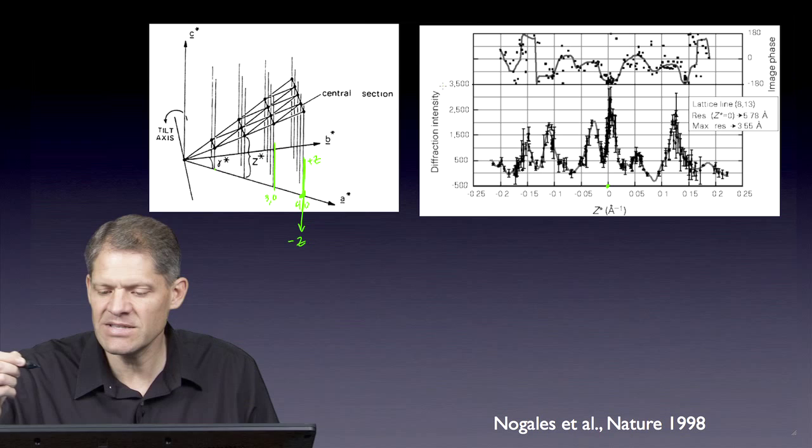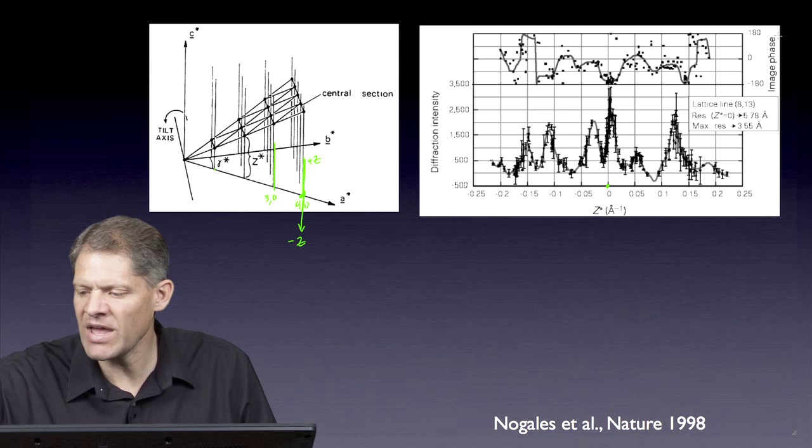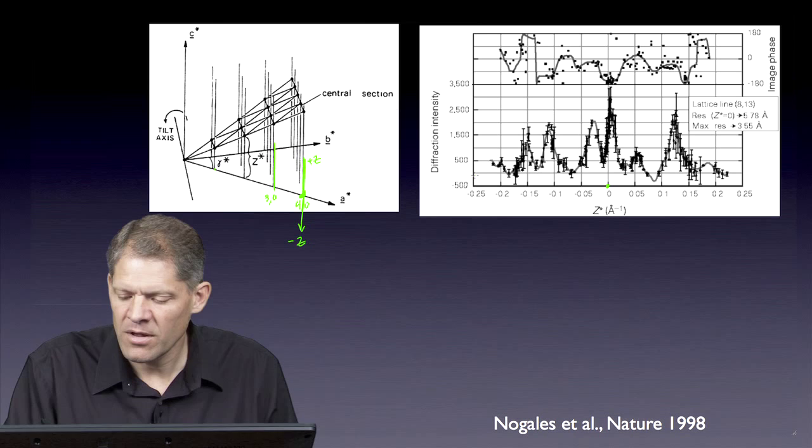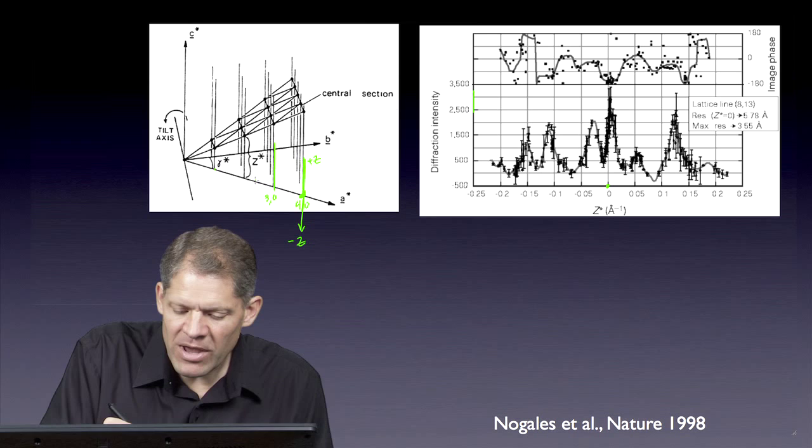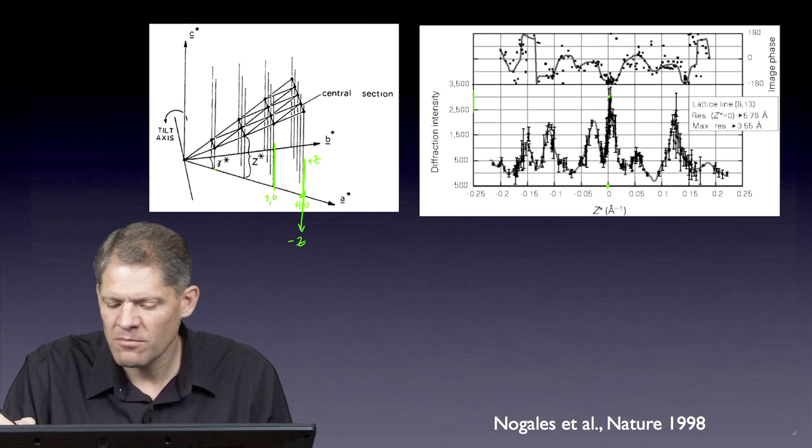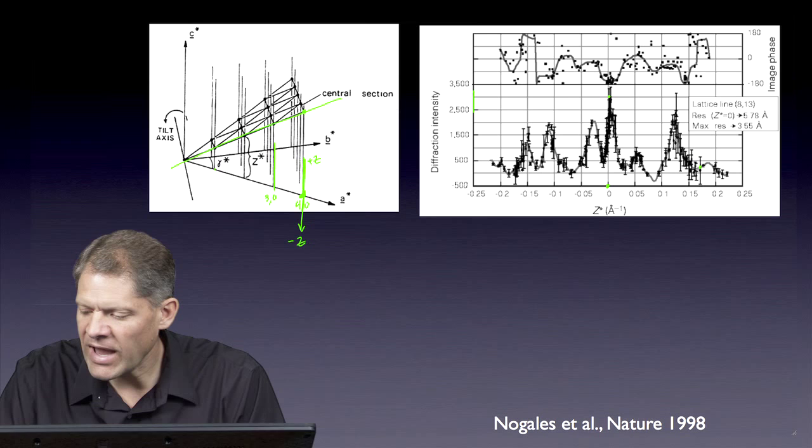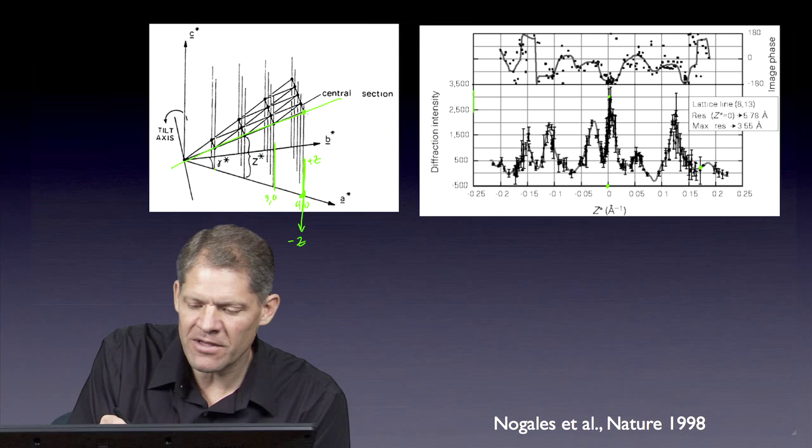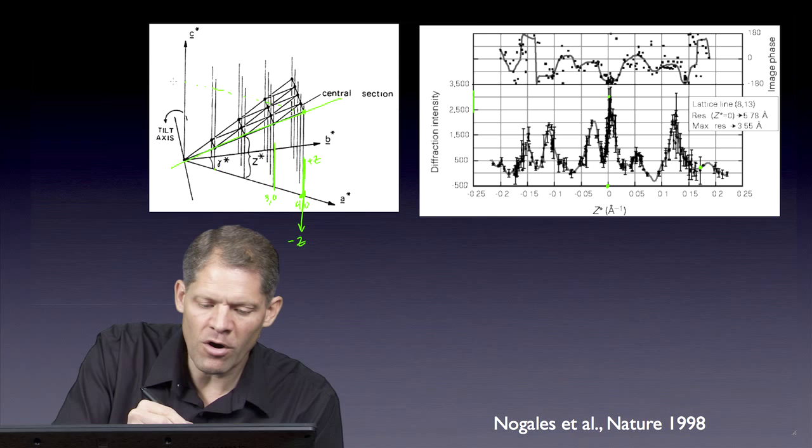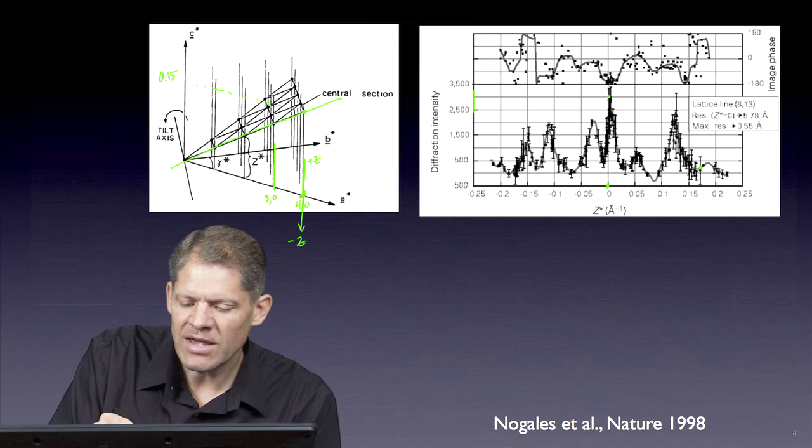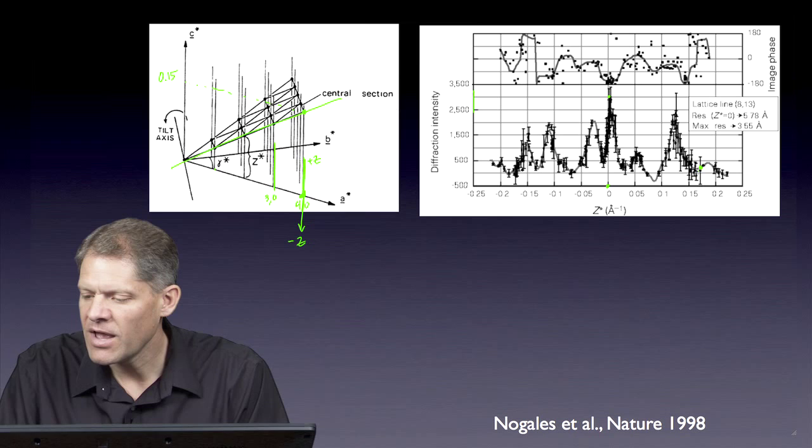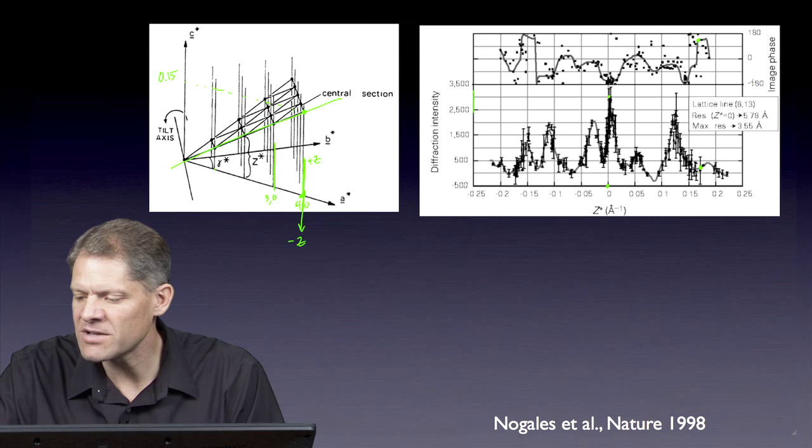What is being plotted is the diffraction intensity here in this plot, and above it is the image phase. Image diffraction intensity is varying from essentially zero to high numbers. Each time we have a measurement of the diffraction intensity, it's plotted on this graph. A central section cutting through here might give us this value of amplitude at some higher z value. Let's say the z value here was equivalent to 0.15. Then the amplitude and phase that were measured in that tilted image, we could plot the amplitude here and the phase up here.